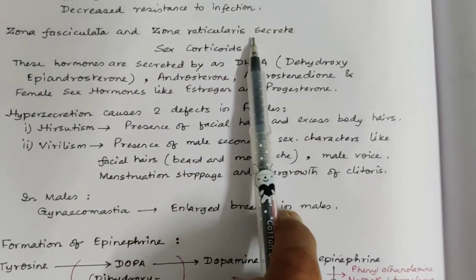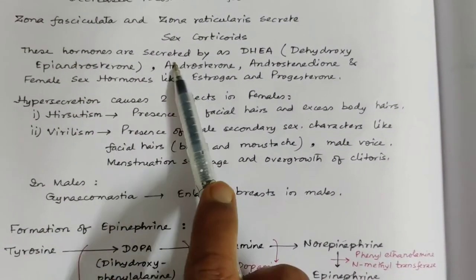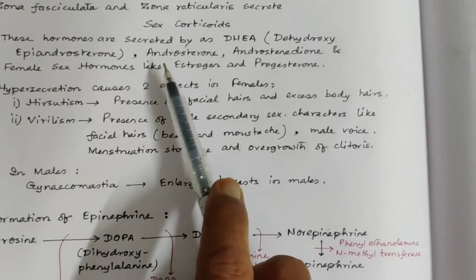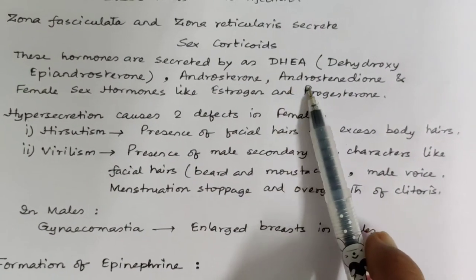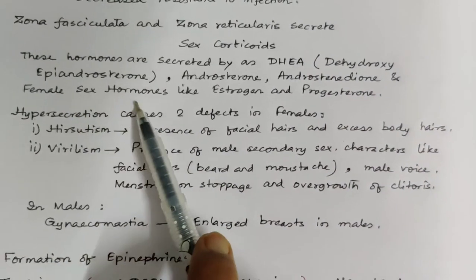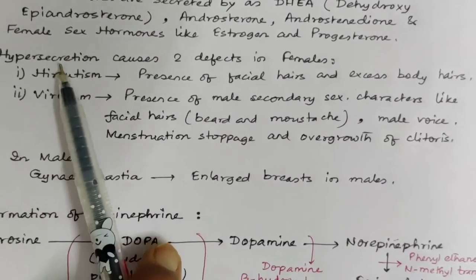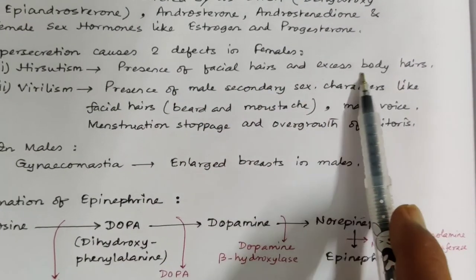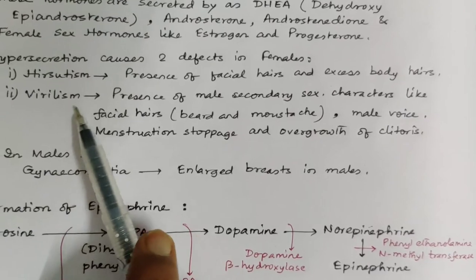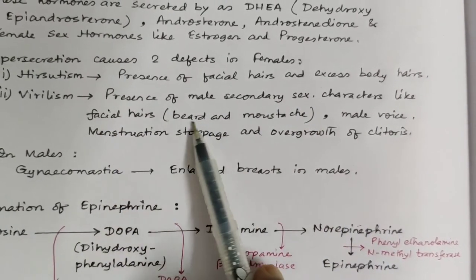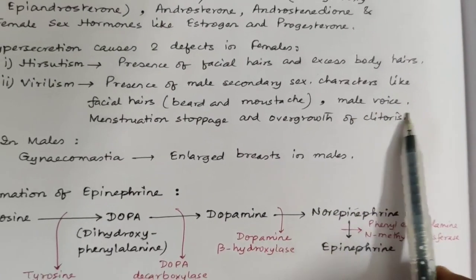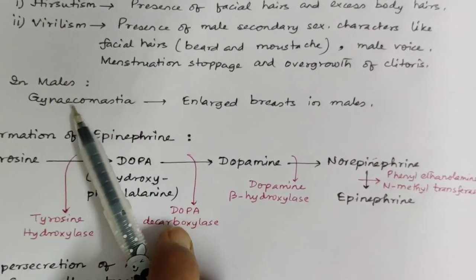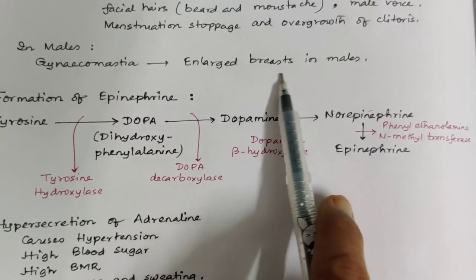Zona fasciculata and zona reticularis together secrete sex corticoids — hormones secreted as DHEA (dehydroepiandrosterone), androsterone, androstenedione, and female sex hormones like estrogen and progesterone. Hypersecretion causes two defects in females: hirsutism (presence of facial and excess body hairs) and virilism (male secondary sexual characters, male-like voice, cessation of menstruation, and overgrowth of clitoris). In males, it leads to gynecomastia — enlarged breasts.